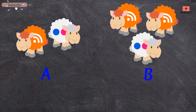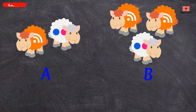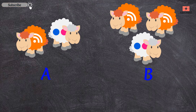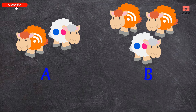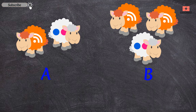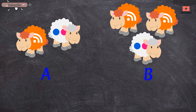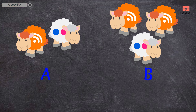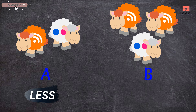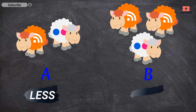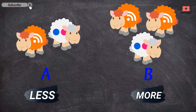A has two sheep and B has three sheep. So can you tell me which picture has more sheep and which picture has less sheep? Yes, you are right! A has less sheep and B has more sheep.